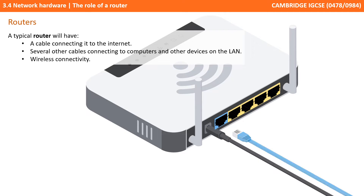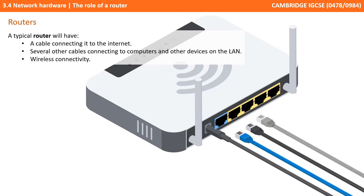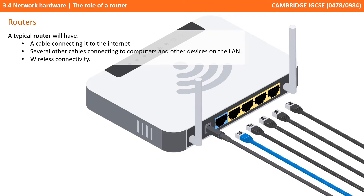A typical router such as the one you might have at home, along with having power, will obviously have an internet cable — shown here in the diagram in blue — connecting it to the outside world, and several other cables possibly connecting to computers and other devices on your local network. It's also more than likely that it will have wireless connectivity as well.